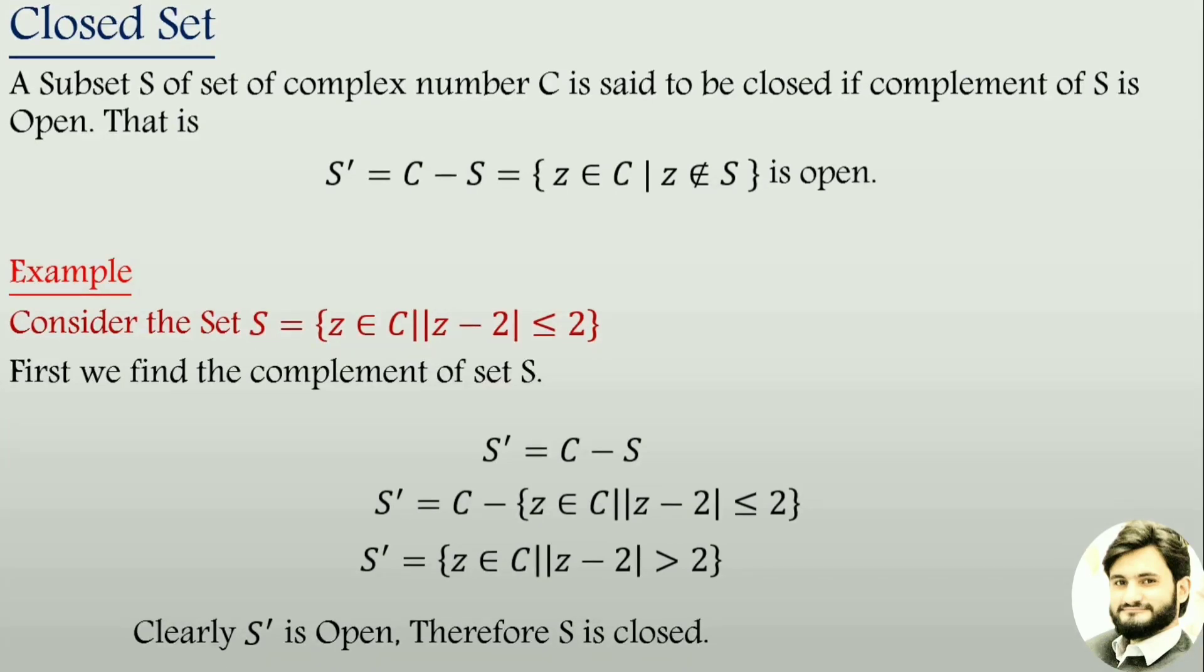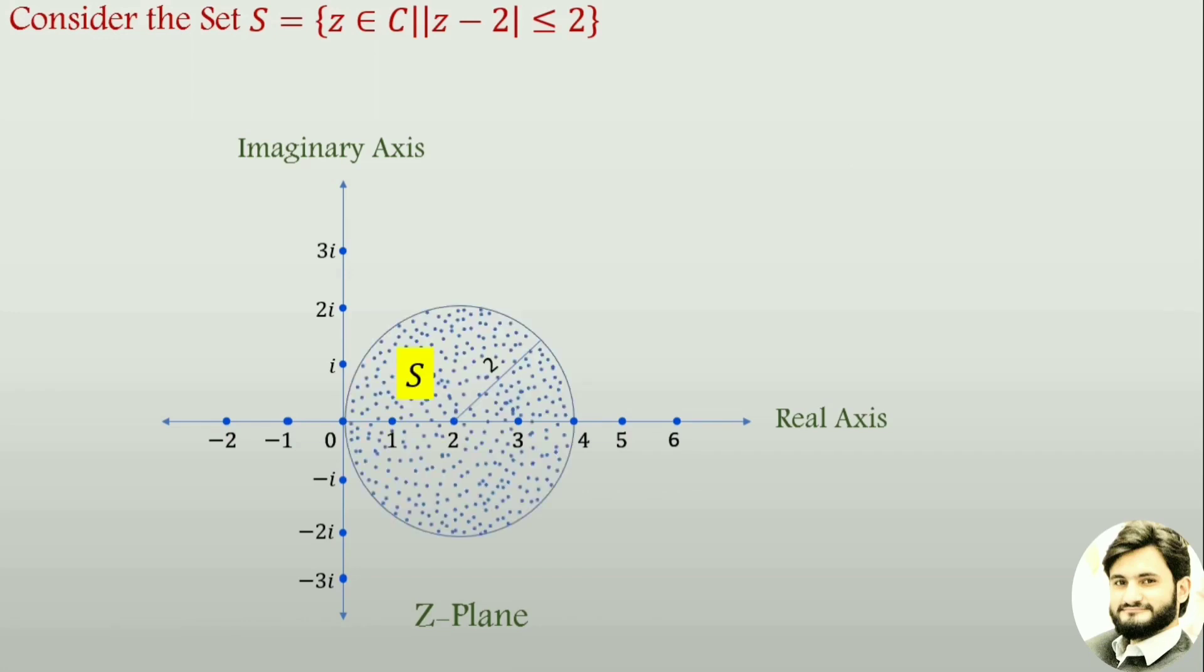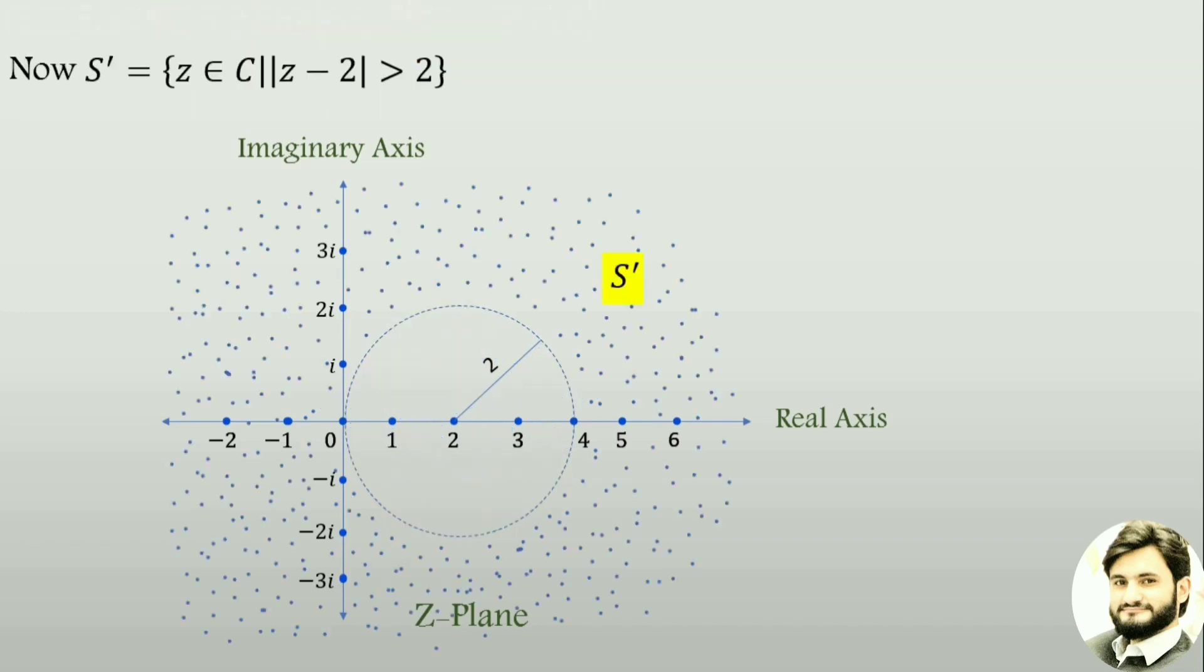Now more precisely, this is our Z plane, this is the real axis of the Z plane, and this is the imaginary axis. Consider the set of points whose distance from point 2 is less than or equal to 2. Now we have set S, and the region outside S is open because no boundary point is included.